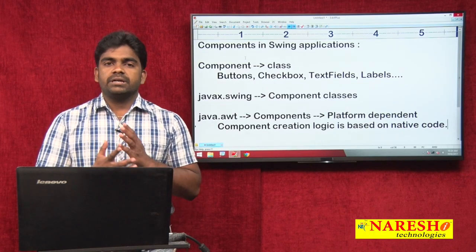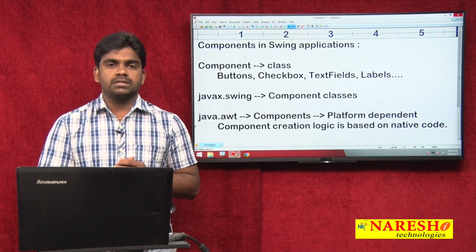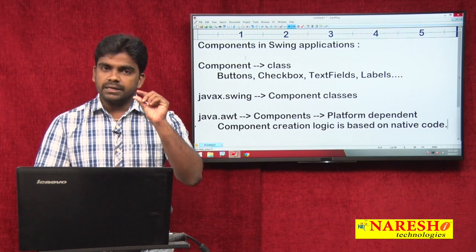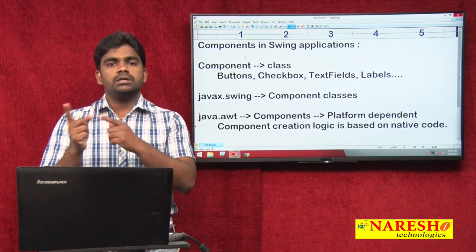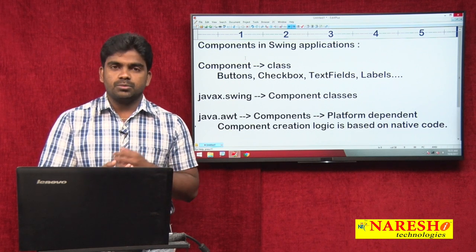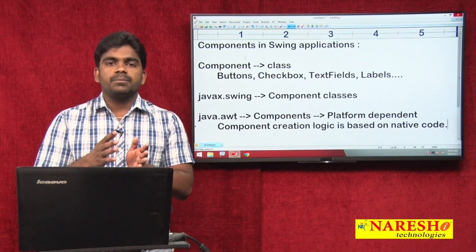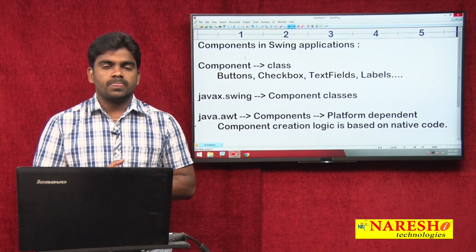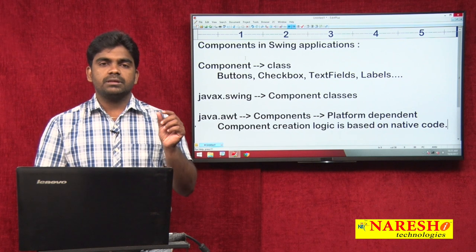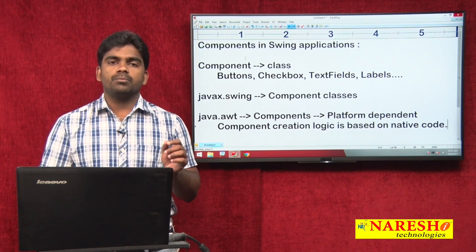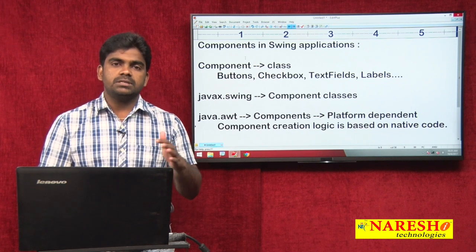What is native code? For example, the current operating system's code. If you are using Windows OS, developed using .NET, then whenever you create a button, the creation depends on the .NET logic. If you are using Linux, developed using C language, then the component creation is based on C code. If it is a Mac OS, that is Objective-C code. So from platform to platform the visibility of the button or component will change, and the Java application is internally using another language's code.